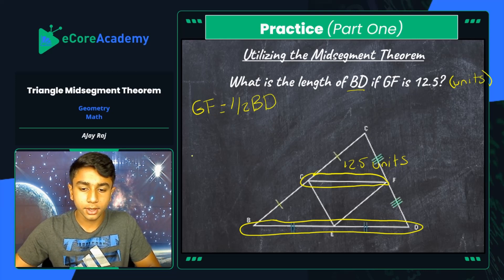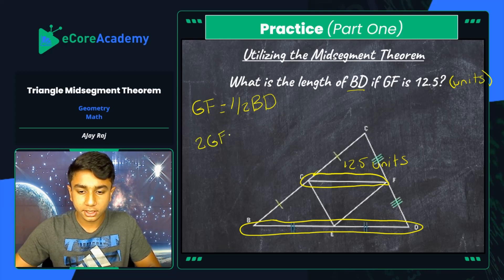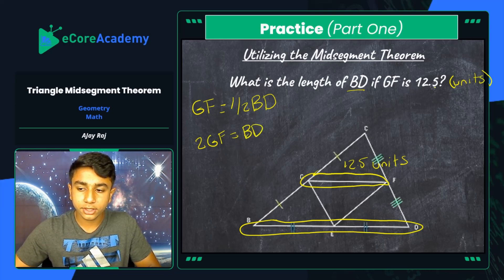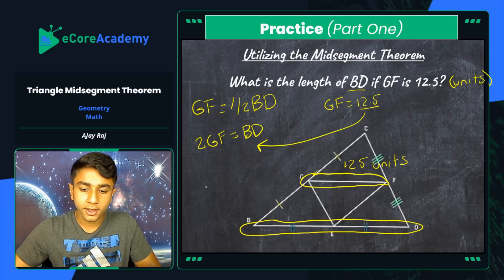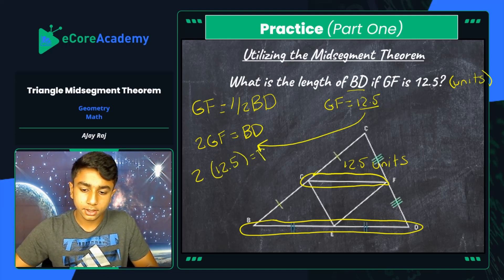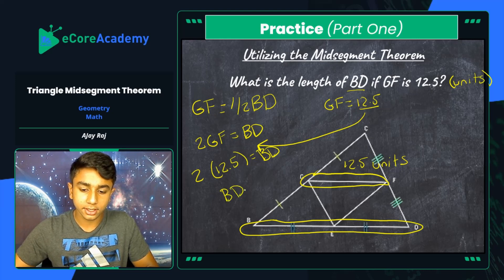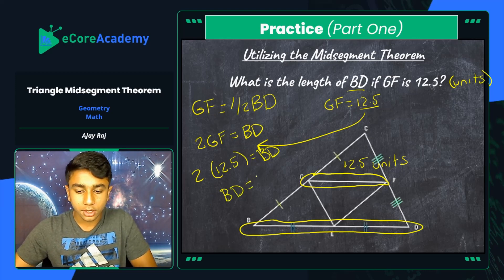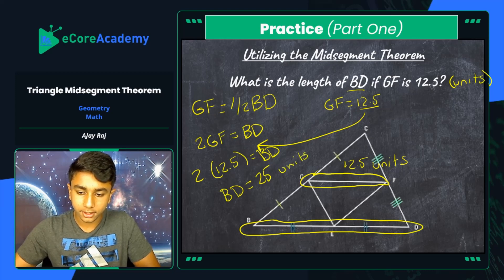We know that 2 times 12.5 is equivalent to 25. So BD, the third side length of our triangle, is going to be equivalent to 25 units. That's the length of BD — that's our answer.